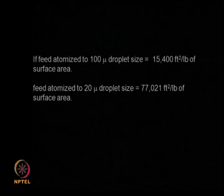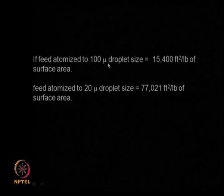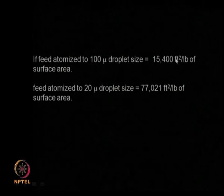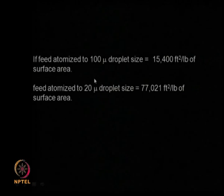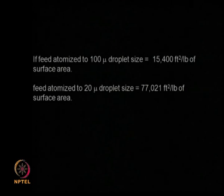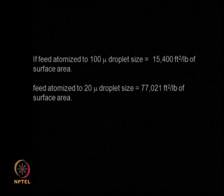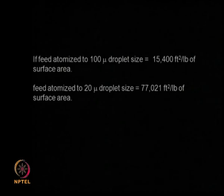The beauty of spray drying is that finer the particle, higher the surface area per unit volume, so heat transfer is good and drying takes place very fast. Solubility also increases because of very high surface area to volume ratio. For example, atomizing to a 100-micron droplet size gives 50,400 square feet per pound, whereas reducing to 20 microns gives almost 77,000 square feet per pound — raising it by almost a factor of 5. That is the main advantage of increasing surface area by reducing particle size.